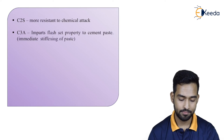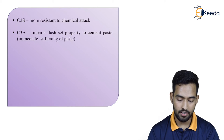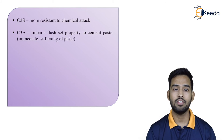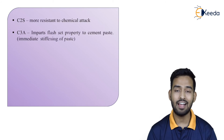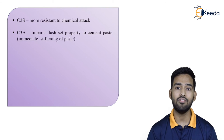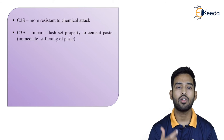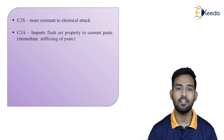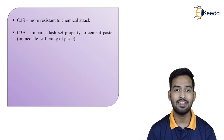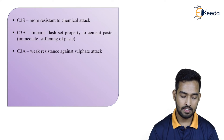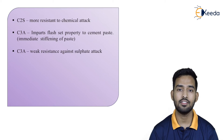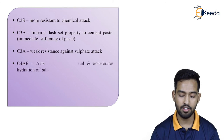C3A imparts flash-set property to cement paste, meaning immediate stiffening. So C3A is responsible for flash set — the concrete will harden fast. However, it is not necessary that it will gain strength also; early strength is given by C3S. C3A has weak resistance against sulphate attack.